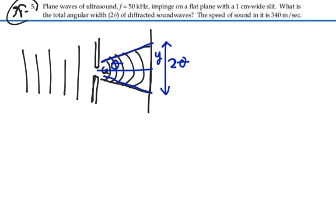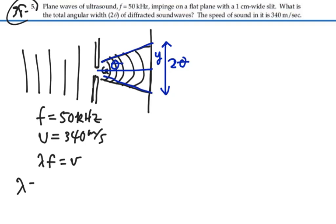All right, we have the frequency is given as 50 kilohertz, and the velocity of the sound is 340 meters per second. We know that the wavelength times the frequency is the velocity, so the wavelength is going to equal the velocity divided by the frequency.